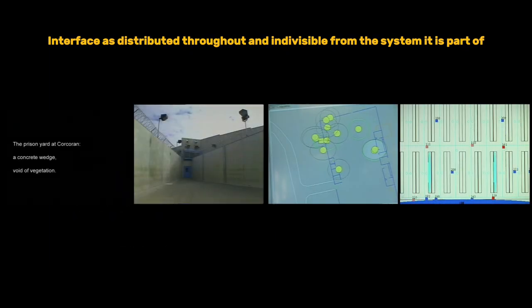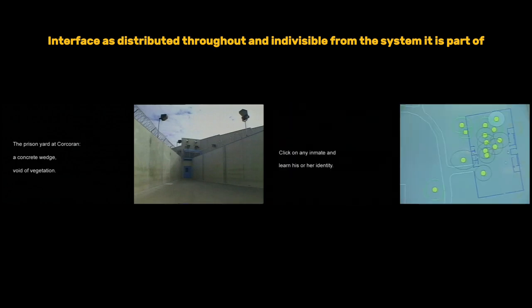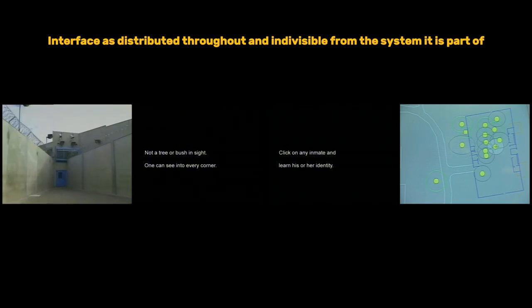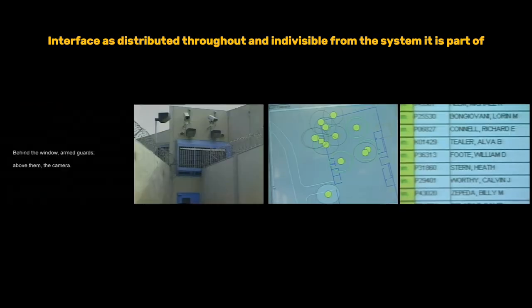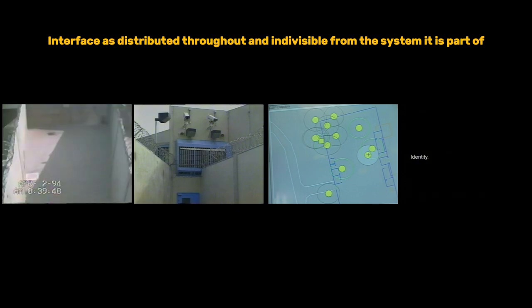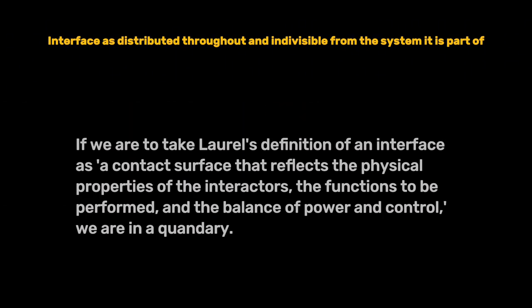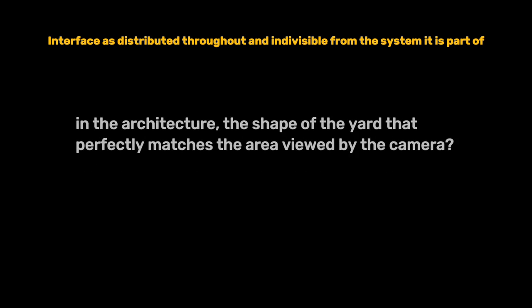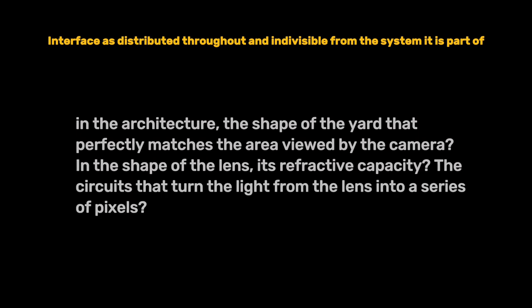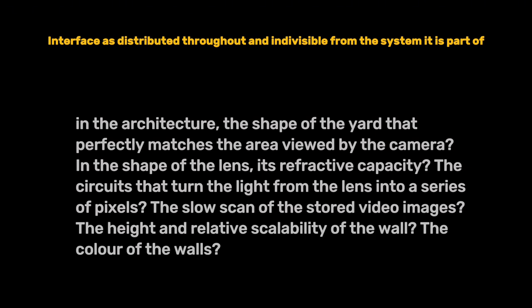Fuller examines the exercise yards in prisons, particularly focusing on the architecture, cameras, and procedures used to control the inmates. The guards watch over the yard from a camera placed at the apex of a slice-like segment of the yard. Using Laurel's definition, Fuller raises a crucial question: where exactly is the interface in this scenario? If we take Laurel's definition of an interface as a contact surface reflecting the physical properties of the interactors, the functions to be performed, and the balance of power and control — we are in a quandary. Where is the interface? In the architecture, the shape of the yard that perfectly matches the area viewed by the camera? In the shape of the lens, its refractive capacity? The circuits that turn the light into pixels? The slow scan of stored video images? The height and color of the walls?